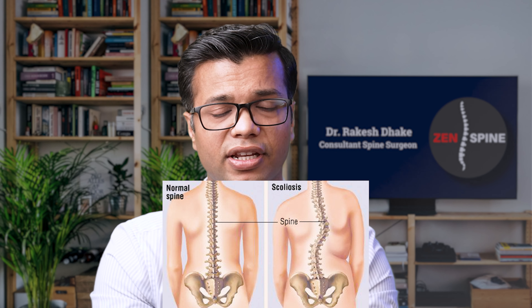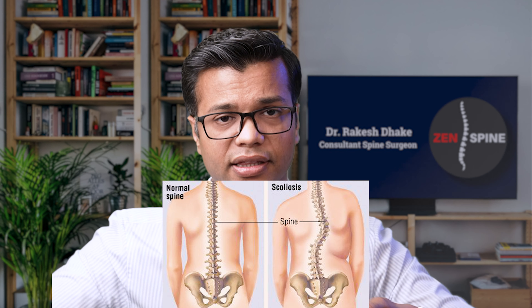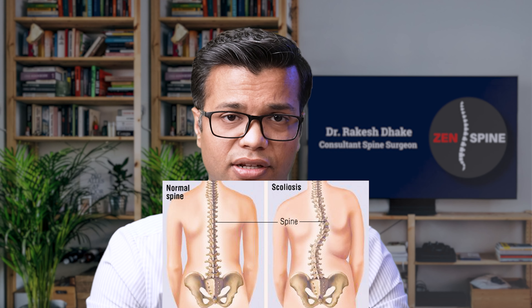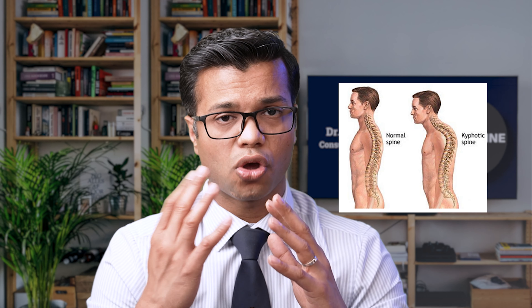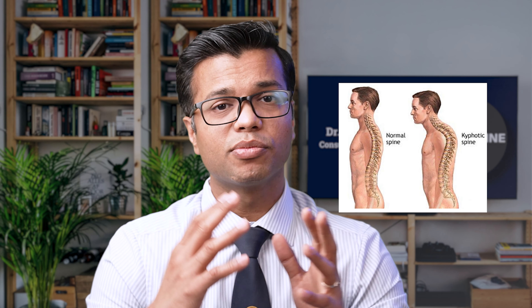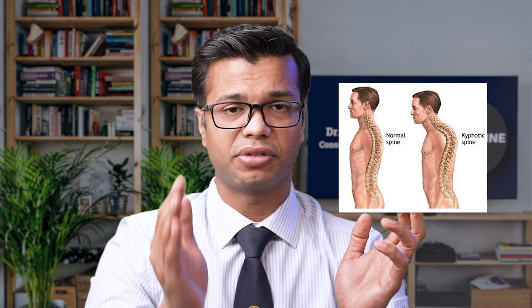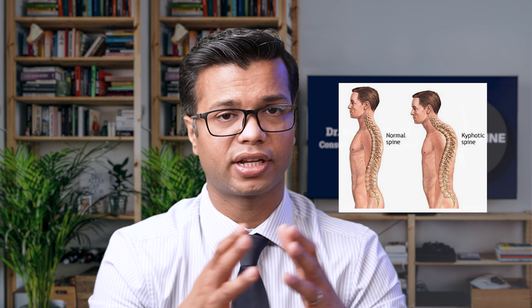Now when you look at the spine from the front, instead of the straight spinal alignment, if there is a curvature in the frontal plane, that is called scoliosis — where there is an abnormal sideways curvature in the spine. Also, when you look from the side and if the kyphosis which was normal in the thoracic region becomes more than normal and the entire back becomes rounded or hunched, then that is called kyphotic spine.